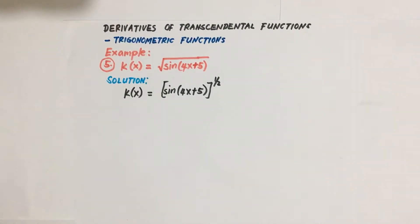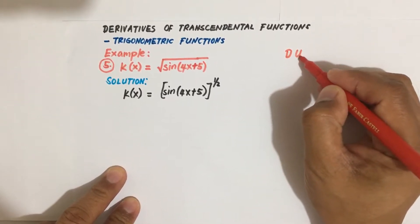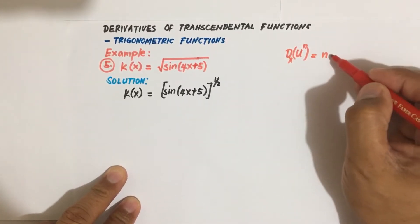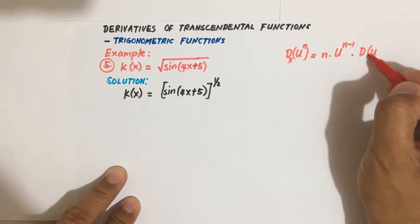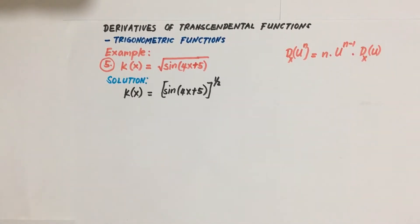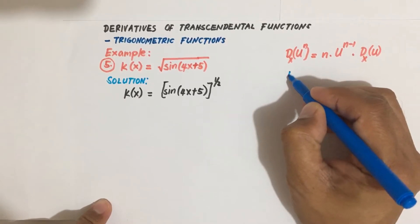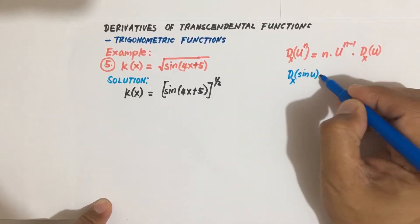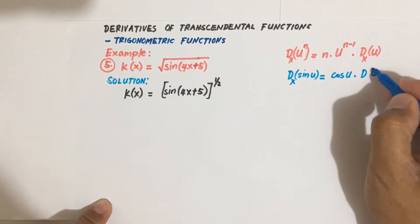This time we are going to use the power rule: the derivative of u to the n with respect to x is equal to n times u to the n minus 1, times the derivative of u with respect to x. We also need the derivative of sin u, which equals cosine u times the derivative of u with respect to x.